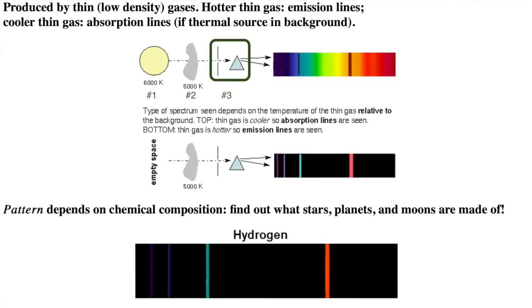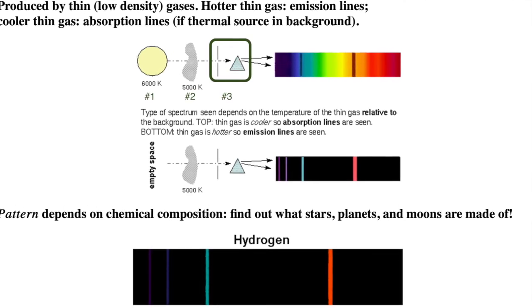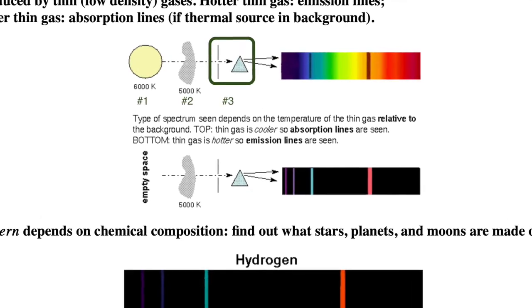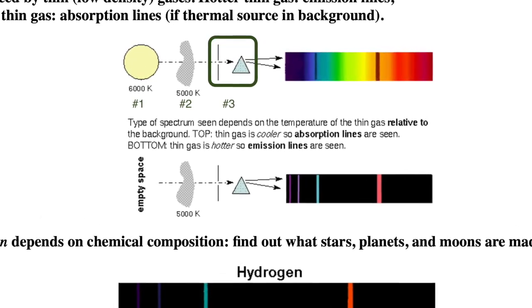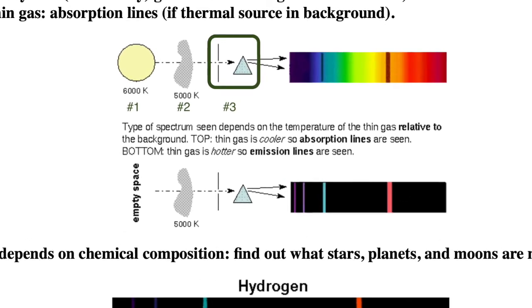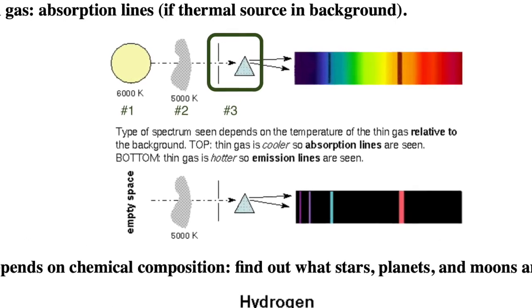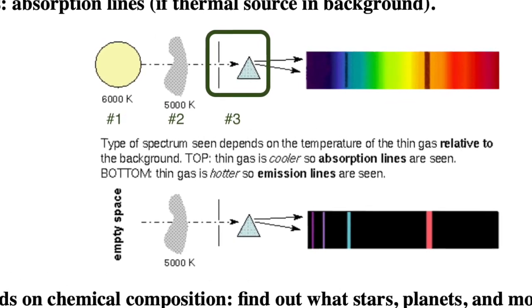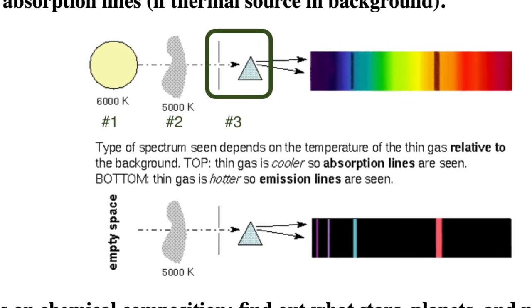For the absorption line spectrum, note the three things in the path: the hot dense object producing the continuous spectrum, the cool thin cloud absorbing some of the light, and the spectrometer which will spread out the light to make the spectrum reaching our camera or eye.